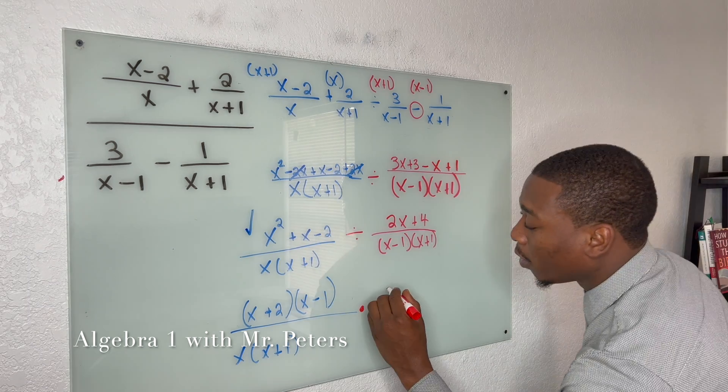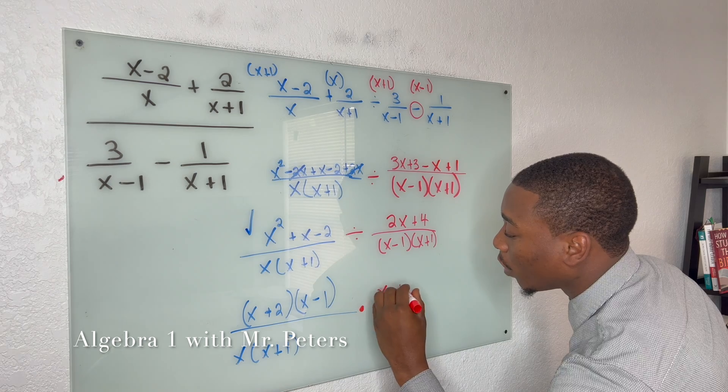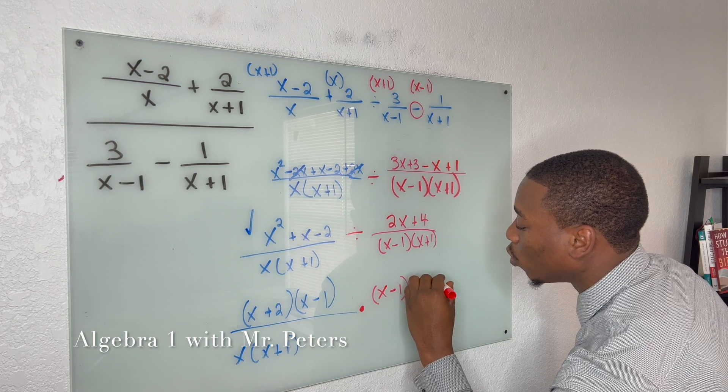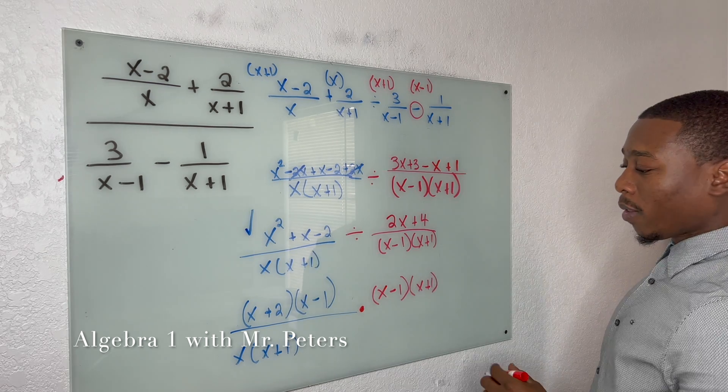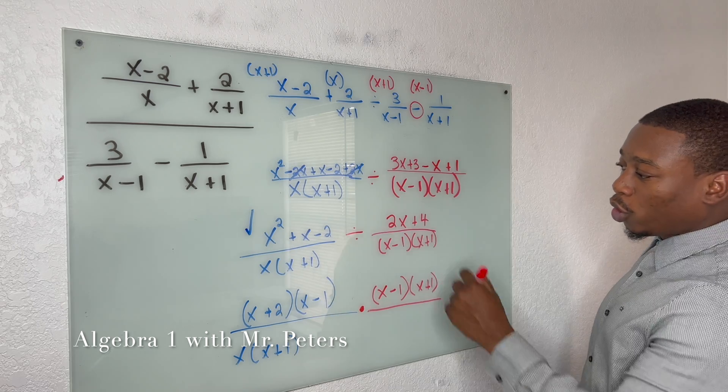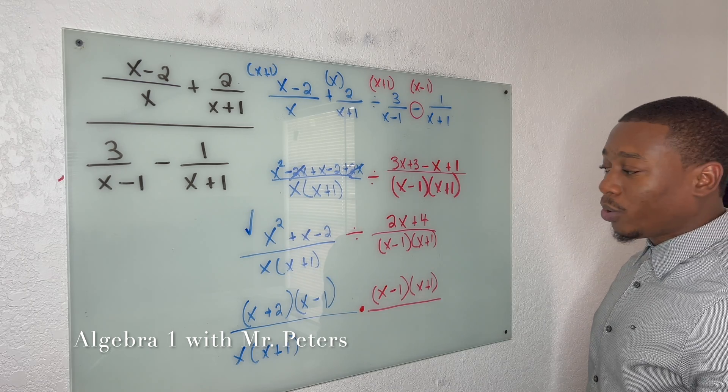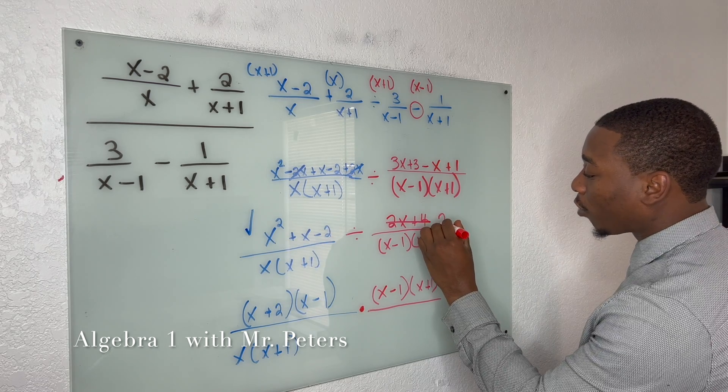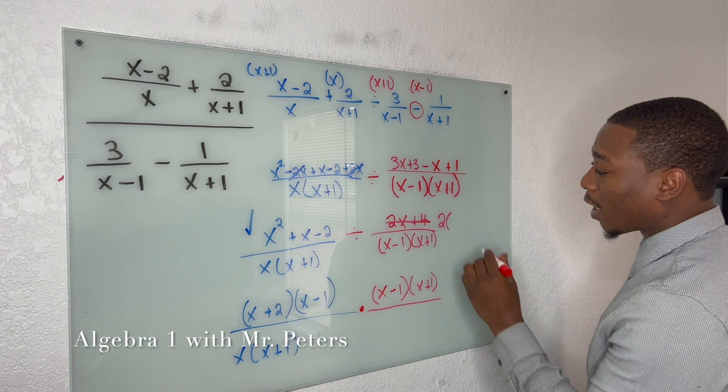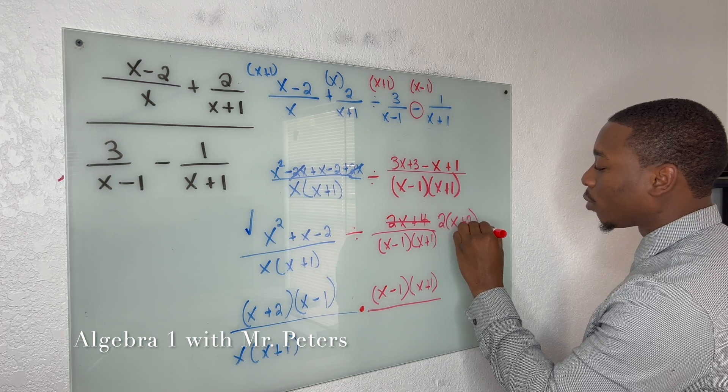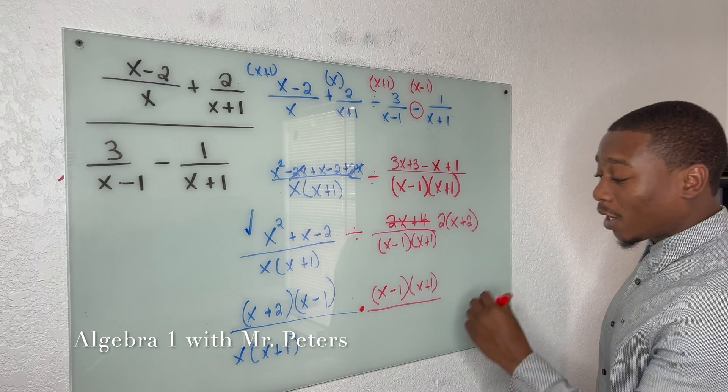We're going to flip this fraction. So we have x minus 1 times x plus 1. And this is going to be all over 2x plus 4. But what I'm going to do, let's simplify this. We're going to pull out a greatest common factor of 2, and then on the inside, we're going to get x plus 2. So that you guys know how I got that.